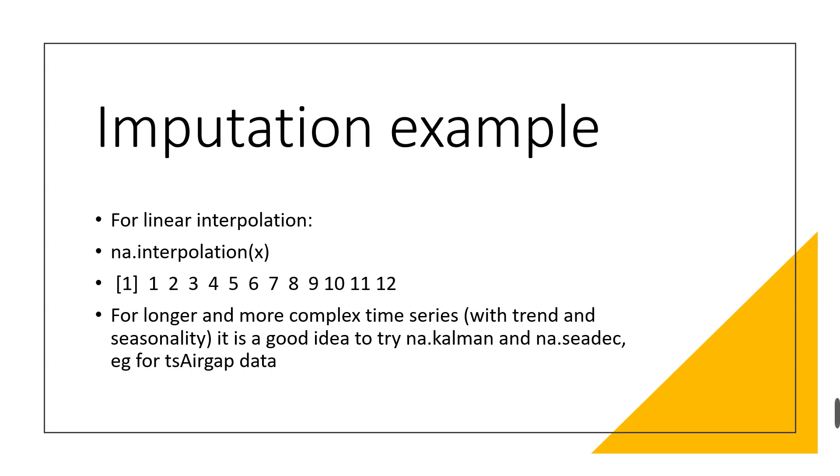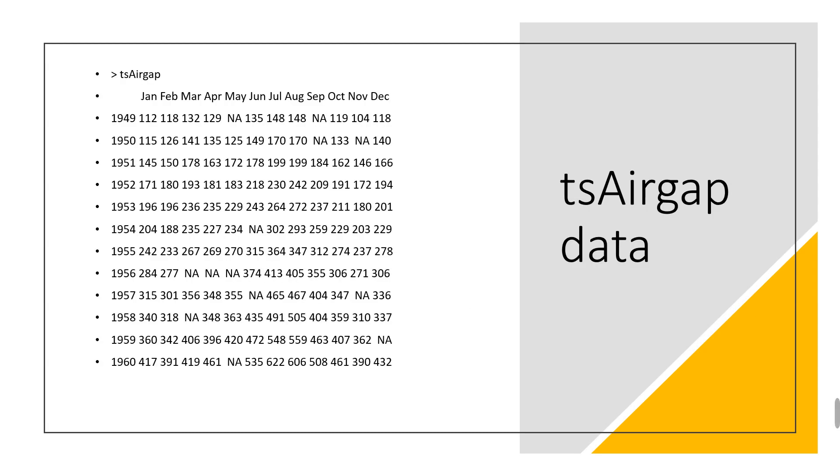We are going to demonstrate how to use imputeTS in order to impute missing data. We are going to demonstrate it with the use of this monthly data on airline passengers, TSairgap. So this is the dataset. Now we can see there are quite a lot of NAs. For instance, the data runs from January 1949 to December 1960. We can see in 1949 we have missing data in May, missing data in September. For 1950, we have missing data in September, then November, and so on and so forth.